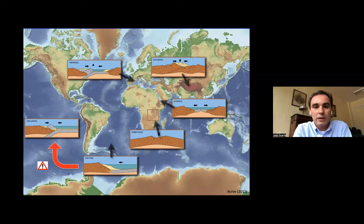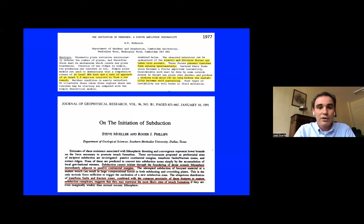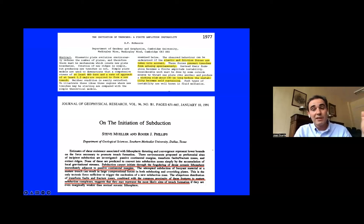Since very early on — and this was one of the first papers on the initiation of subduction trenches — Dan McKenzie showed that you need convergence, a differential velocity at the margin. Even in the classical paper by Moulin and Phillips on initiation of subduction, that's the conclusion. You can have facilitating mechanisms like serpentinization and thermal erosion, but it's not easy.